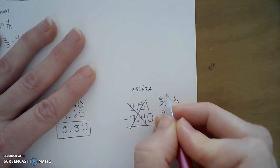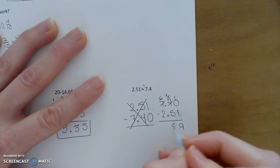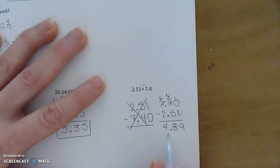This is six and carry a group of ten over into the next place. Thirteen minus five is eight. Six minus two is four. So the difference between the two numbers is four and eighty nine hundredths.